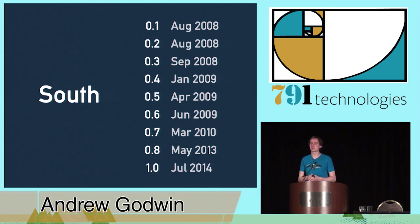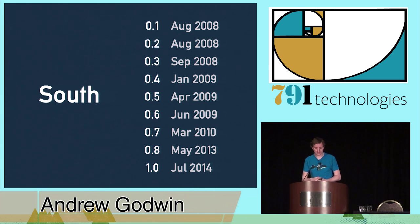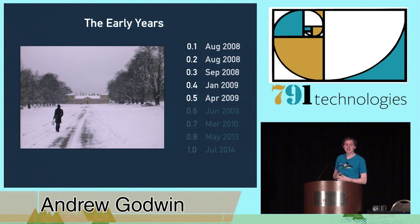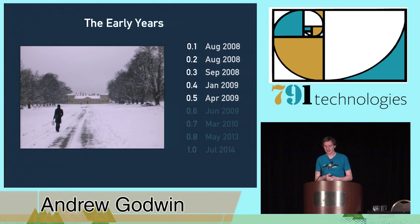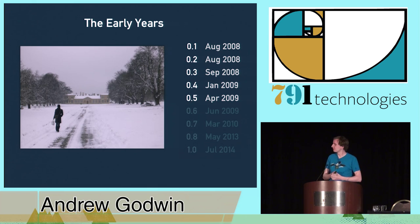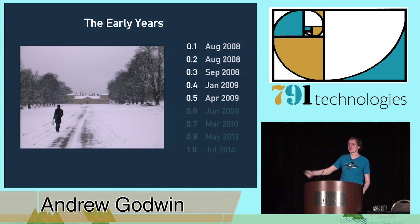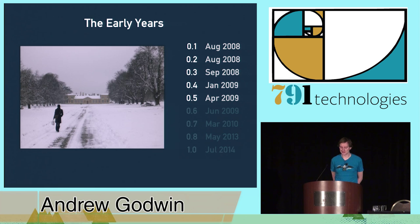South was initially launched in August of 2008, from the second-to-the-right window of a building called the stable block in Cornbury Park in Oxfordshire — a very lovely place to launch code from. I was working at the time for an agency called Torchbox, a small development agency in Oxfordshire with offices in a country estate. It fits the British stereotype — I launched my code from this wonderful country manor.